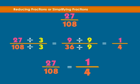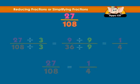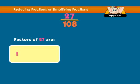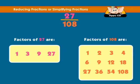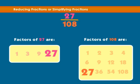The best way to do it is to get the greatest common factor of 27 and 108. The factors of 27 are 1, 3, 9, 27. The factors of 108 are 1, 2, 3, 4, 6, 9, 12, 18, 27, 36, 54, 108. The highest factor common to both is 27. Hence, the HCF is 27.